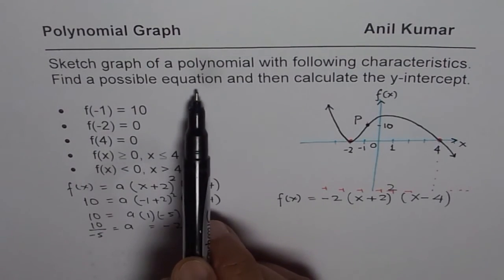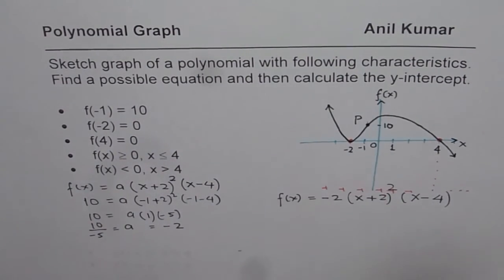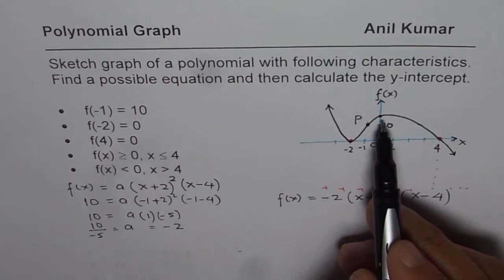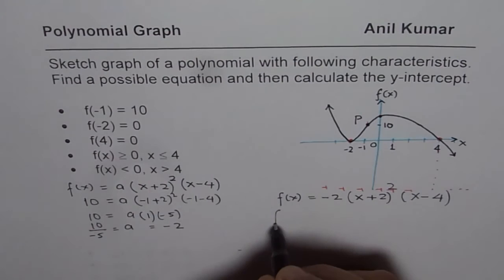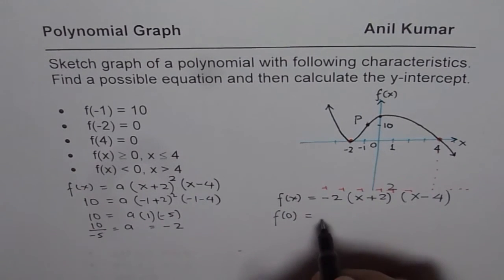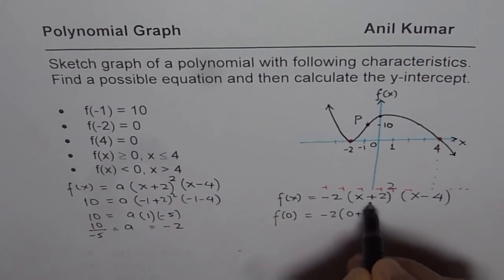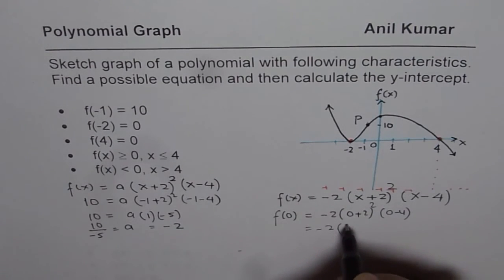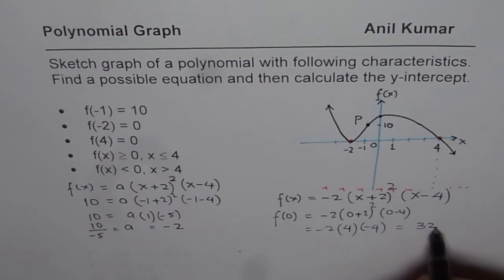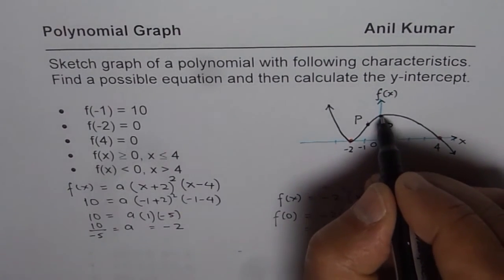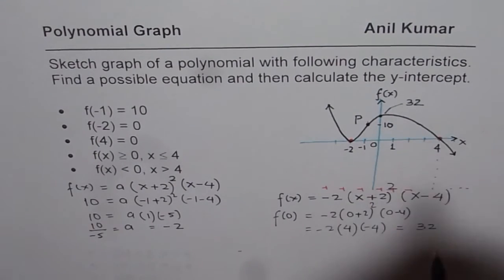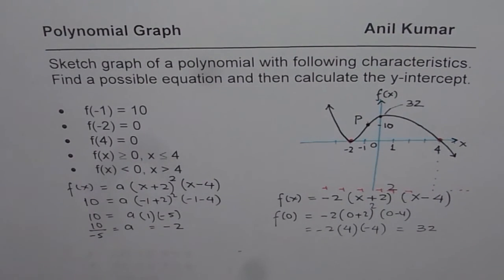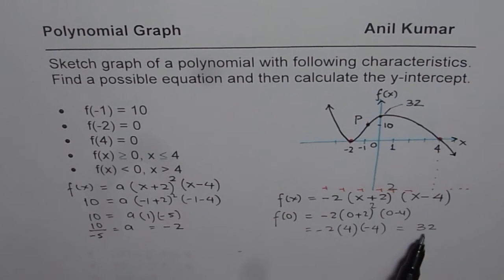Now the question is, find a possible equation and then calculate y-intercept. Now that is the y-intercept. y-intercept means x is 0. So that means we need to find what is f of 0 equals to. So let's substitute 0 here for x. So we have 0 plus 2 whole square times 0 minus 4. And that gives you the value minus 2 times 2 squared is 4 and minus 4. So that gives us 32. 4 times 4 is 16, times 2 is 32. Negative, negative becomes positive. So this point should be at 32. This drawing is not to the scale, but that is how it should be. So the y-intercept is 32 for you.